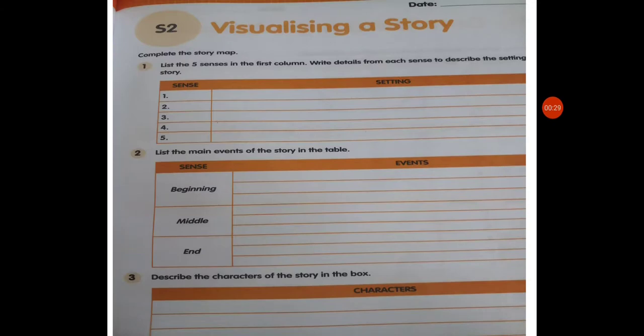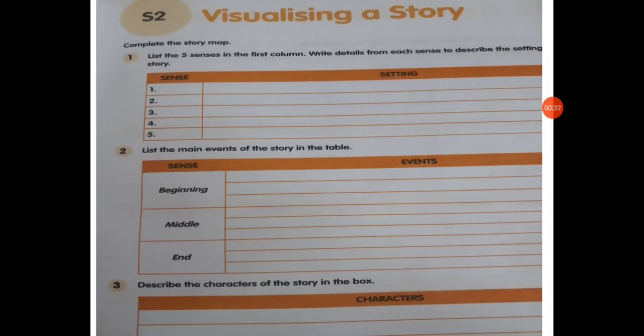In this video we will discuss our worksheet S2. There is a worksheet called 'Visualizing a Story.' Question one: list the five senses. In the first column, write details from each sense to describe the setting of the story. The setting of the story is a corn field.